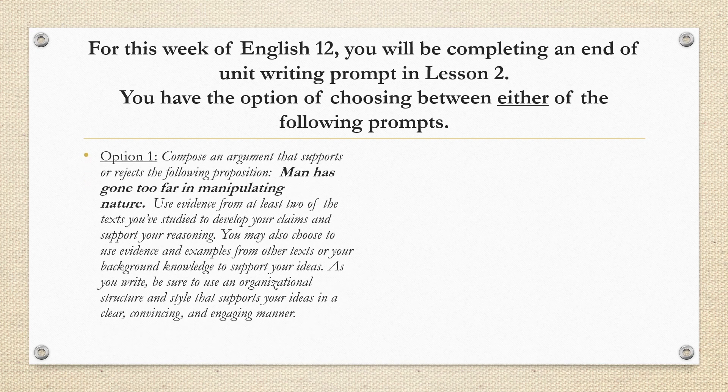Option 1: Compose an argument that supports or rejects the following proposition — man has gone too far in manipulating nature. Use evidence from at least two of the texts you've studied to develop your claims and support your reasoning. You may also choose to use evidence and examples from other texts or your background knowledge to support your ideas. As you write, be sure to use an organizational structure and style that supports your ideas in a clear, convincing, and engaging manner. You would likely choose this option if you focused mostly on the informational texts about genetic modification or felt like those texts connected with you most.